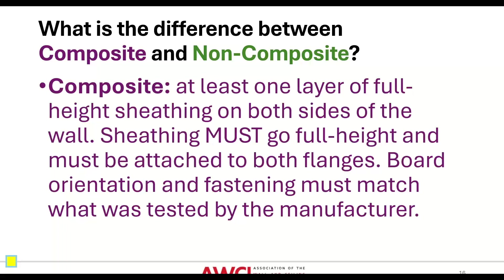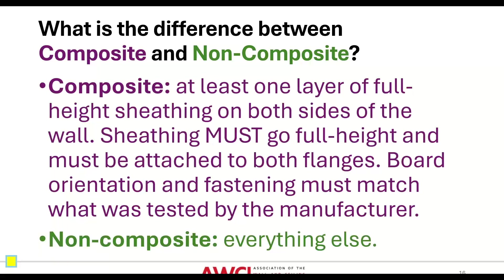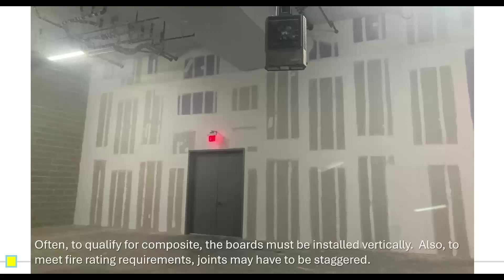Board orientation and fastening must match what was tested by the manufacturer. Quite often, to qualify for composite, the board must be installed vertically — that's how most manufacturers test it. Also, to meet fire rating requirements, joints may have to be staggered. This image comes from the SFIA Online Fire and Acoustical Directory, which references designs from the Gypsum Association, UL, and UL Canada. It gives basic information about the design and a plan detail in the upper right. You can see C-shapes representing studs, squiggly lines representing insulation, and dotted parts representing gypsum board — from one layer for one hour up to four layers for up to four hours for UL Design U-419.